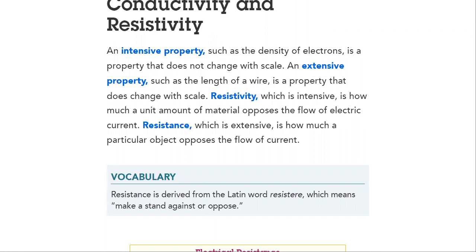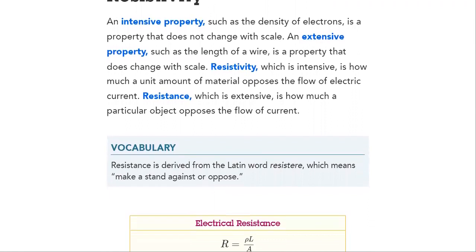Extensive properties, such as the length of a wire, is a property that does change with scale. And then we will define resistivity and what is resistance.